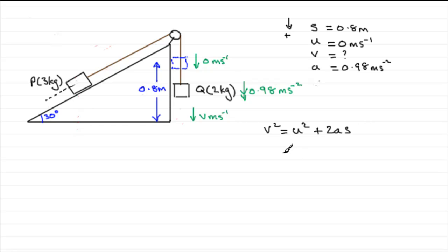So what is U? Well, U is 0, so that's going to be 0 when you square it. I'll just put it in anyway. Then we've got plus 2 times the acceleration, 0.98, times S. S, the displacement, 0.8.